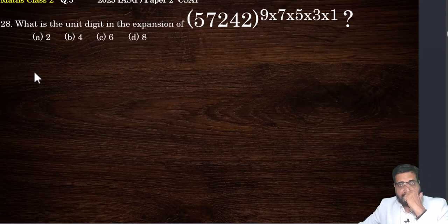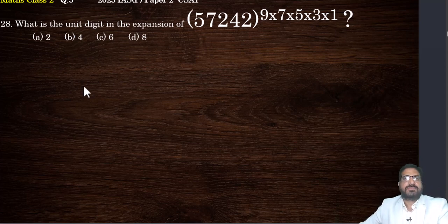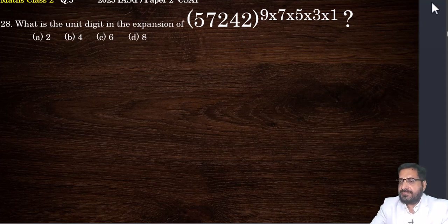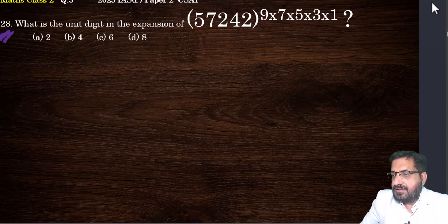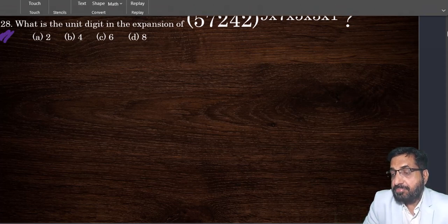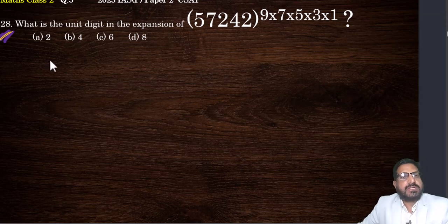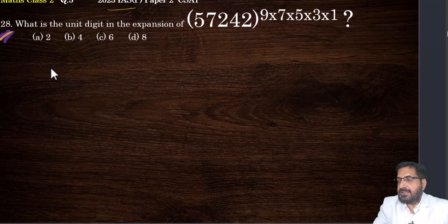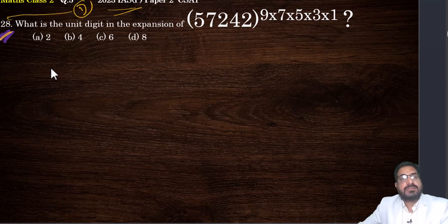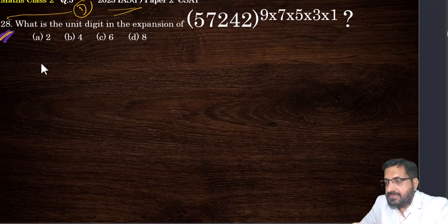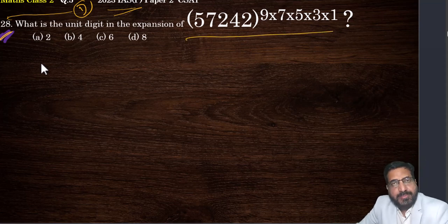Let us move into today's next problem. This is question 5 in my series — question number 28 in the question paper of 2023 IAS Primary Exam D-series. What is this? You have to find what is the unit digit in the expansion of this number. In my previous class, I had given this problem as an assignment for you.